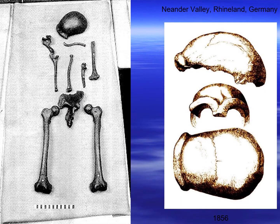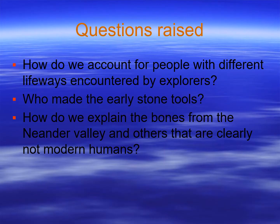Then there were the bones — like this skeleton from the Neander Valley in Germany. Very, very human-like, but note the skull is flatter and has a thicker brow ridge than modern humans. The questions raised by these discoveries were: how do we account for people with different life ways encountered by explorers? Who made those early stone tools? And how do we explain the bones from the Neander Valley that are clearly not modern humans?